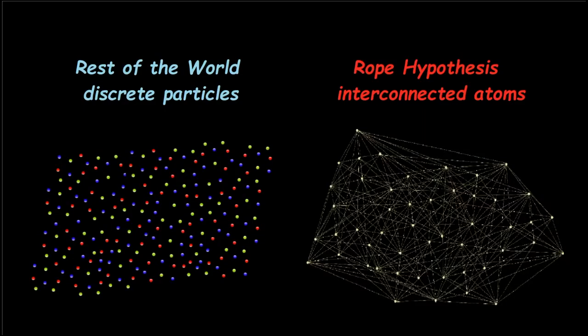Hello everyone and welcome to Rational Science. Another day in physics — rational physics compared to what they do out there. Are we different here? Well, we do physics with objects, and more specifically we have something different than everybody else. Everybody else has all these little particles flying around, and we say that all atoms in the universe are interconnected — physically interconnected.